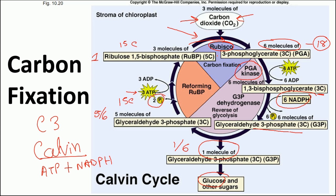The most important step in the Calvin cycle is the first one involving Rubisco. Rubisco is the most abundant protein and enzyme on Earth because it is present in every cell of every organism that performs photosynthesis. However, Rubisco has a problem: it can also bind and fix oxygen in addition to carbon dioxide. When oxygen is fixed instead of CO2, it wastes energy. For this reason, some plants use an alternative pathway called the C4 pathway to complete photosynthesis more efficiently.